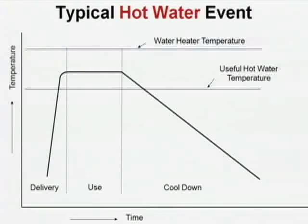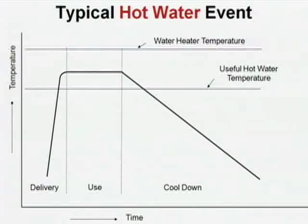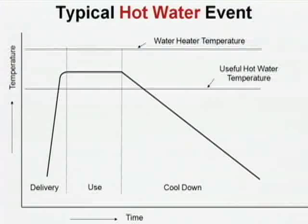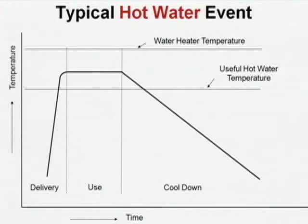Here's a typical hot water event. There's a delivery phase, a use phase, and a cool down phase for every hot water event. You turn on the tap — you are some distance in volume from the water heater going through the pipes at some temperature. It has to go a certain distance with a certain volume and it gets there. That's the delivery phase.